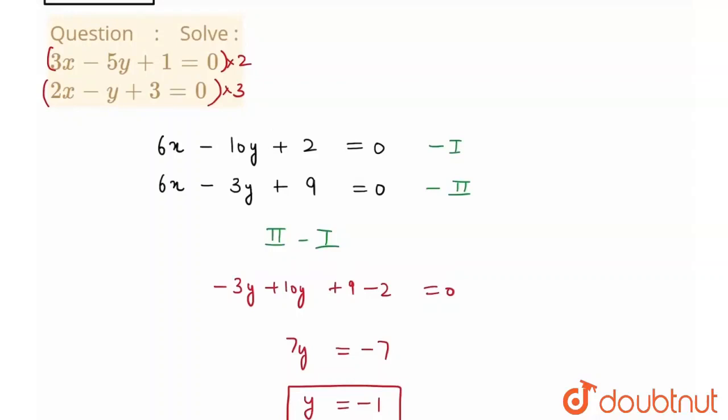Here, 3x plus 5, here I put the value of y as minus 1, plus 1 is equal to 0. Therefore, I'll get 3x is equal to minus 6, or I can say my x would be equal to minus 2.